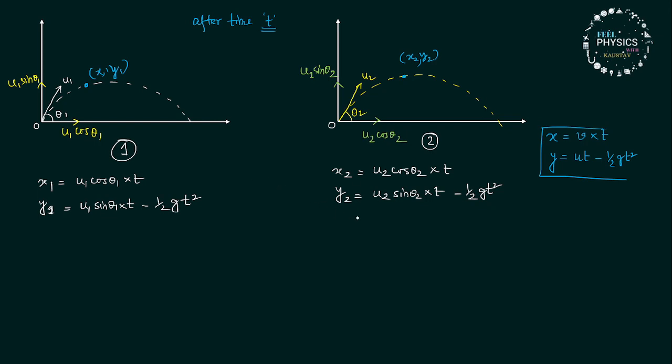From these four equations, we can find the relative displacement of one particle with respect to the other. If we find the relative displacement of particle 1 with respect to particle 2, it will be written as delta x equals x2 minus x1.